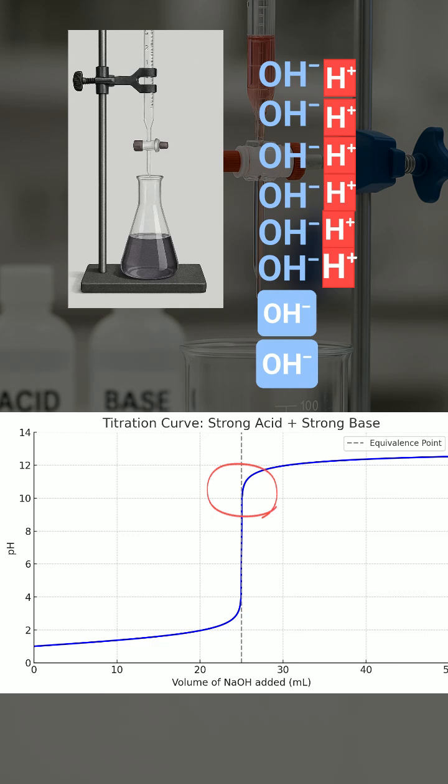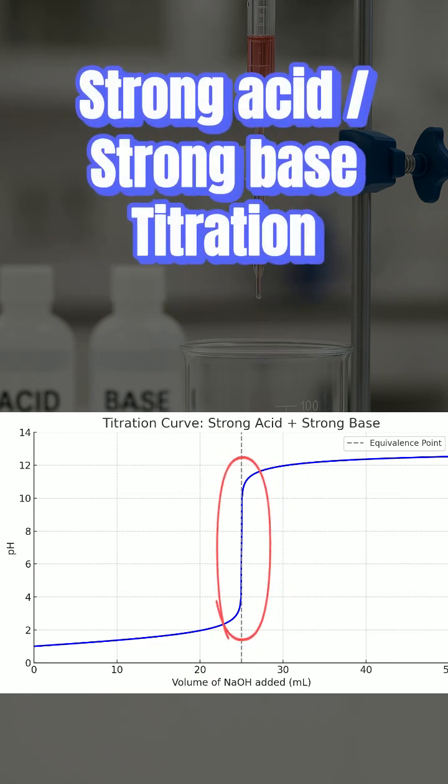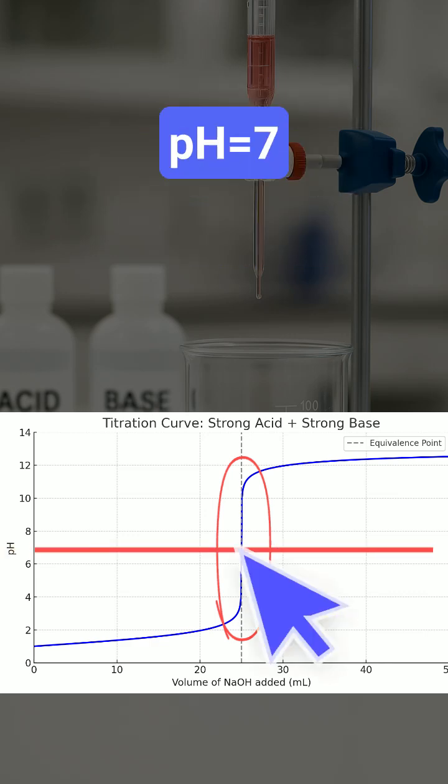In the exam, you'll need to recognize the following: a sharp vertical jump in the middle of the titration curve signals a strong acid-strong base, and at the equivalence point, pH is always 7.